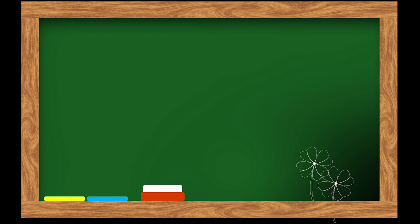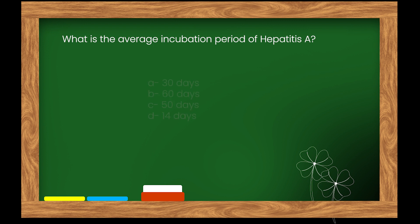Here is our next question. What is the average incubation period of hepatitis A? Options: A. 30 days. B. 60 days. C. 50 days. D. 14 days.